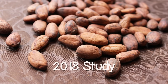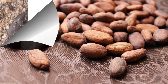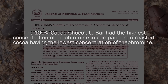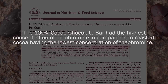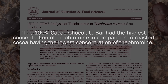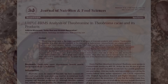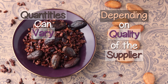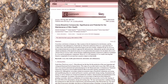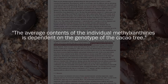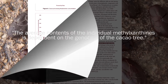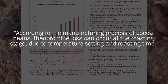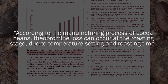In a 2018 study published in the Journal of Nutrition and Food Sciences, it was shown that a chocolate bar sample containing 100% cacao had the highest concentration of theobromine in contrast to roasted cocoa, which had the lowest amount of theobromine. These quantities may vary depending on the quality of the supplier, as chemical constituents such as methylxanthines are known to increase according to the genotype of the cacao species. It was also substantiated in research that theobromine loss can occur at the roasting stage due to high temperature and amount of time roasted.